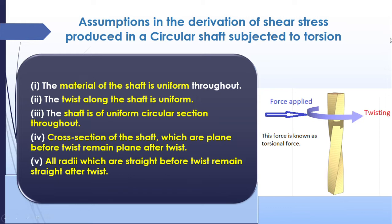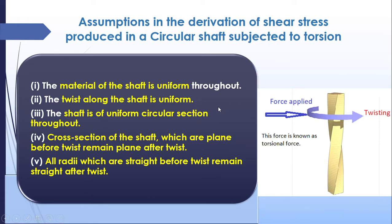The twist produced due to the force should be uniform throughout the shaft. The shaft must have a uniform circular cross section, and that cross section should remain the same before and after twisting. All radii which are straight before twist remain straight after twist. Twisting causes dislocation of particles in the body, but it should not cause any change in the radius of the shaft.